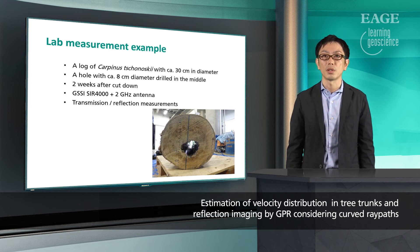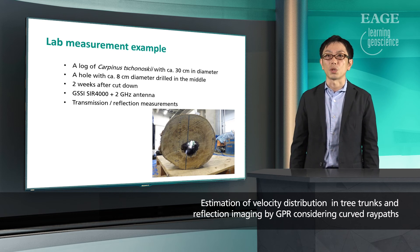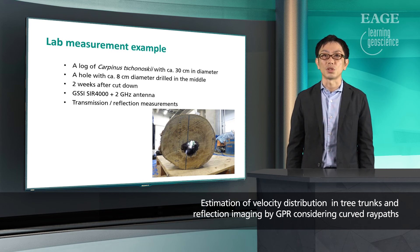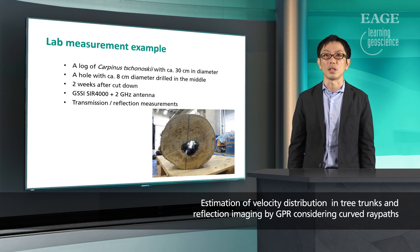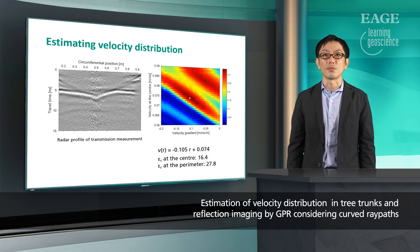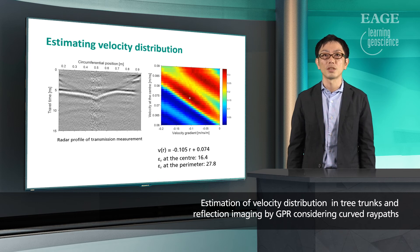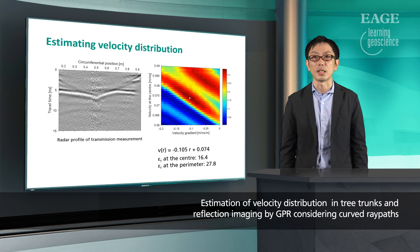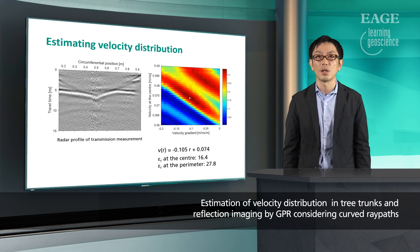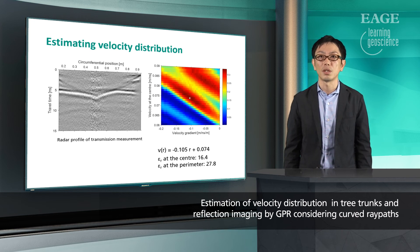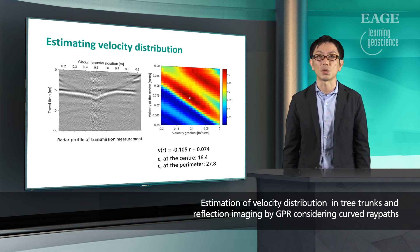Now I show a lab measurement example. We got a relatively fresh log, and a hole was drilled in the middle, as shown in the photo. The transmission and reflection measurements were carried out on the log with GSSI-4000 and 2 GHz antenna. The figure on the left shows the data acquired by the transmission measurement. The semblance is calculated on this data, and the distribution is obtained as shown on the right. The white cross shows the maximum semblance value, and it gives the estimation of the velocity model.